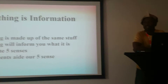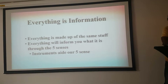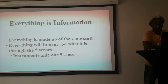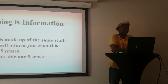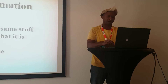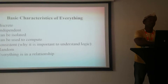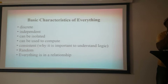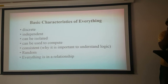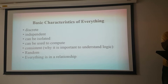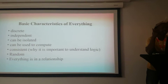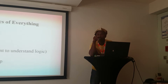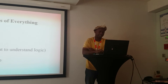Everything is information. Everything is made up of the same stuff. Everything will inform you what it is through the five senses — instruments aid our five senses. The basic characteristics of everything: it is discrete, independent, can be isolated, can be used to compute, is consistent — that's why logic is important — it is random, and everything is in a relationship.